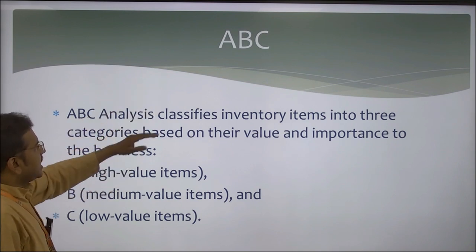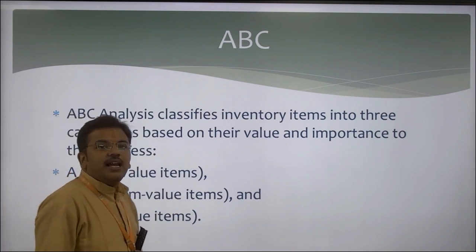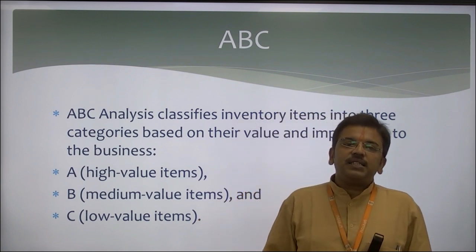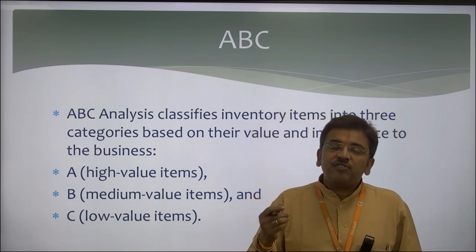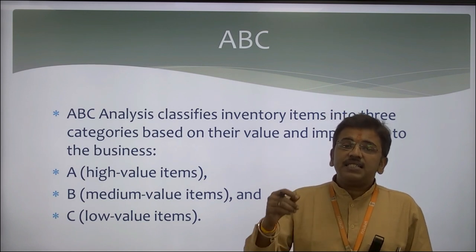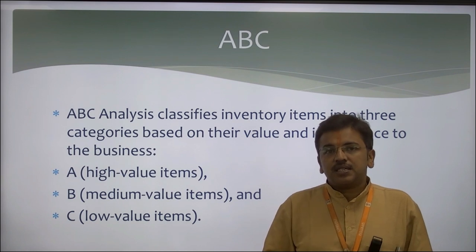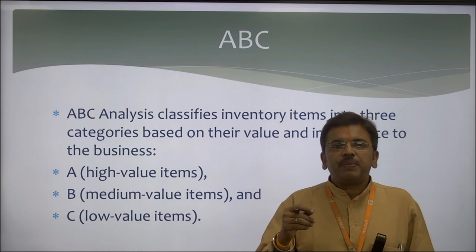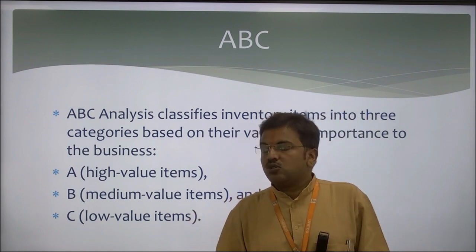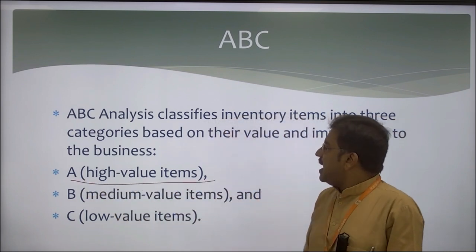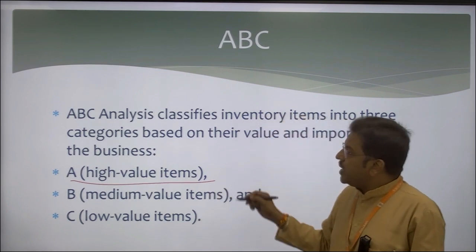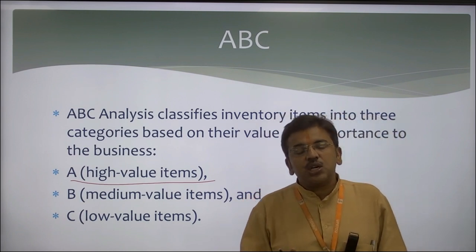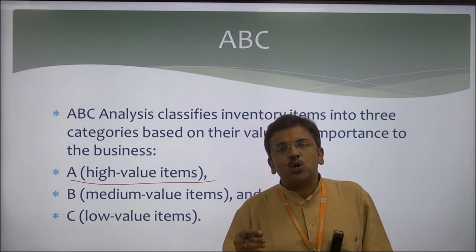ABC analysis classifies inventory items into three categories based on their values and importance. Whenever we buy raw material, it is very important to consider its cost, value, and the conditions under which it should be kept. Sometimes the cost of raw material is very high and requires special care so that environmental impact does not affect its quality. When we talk about the A category, it consists of highly valued items where the cost is very high, and to reduce wastage, we buy this quantity as per the need of our production unit.